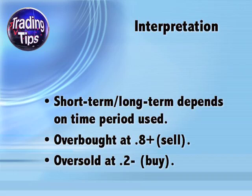The first thing to consider when interpreting Stochastic RSI is the duration of the time period under consideration, as this correlates to whether it can be considered a long-term or short-term indicator. Using a 14-day time period, for example, would make it a short-term indicator; using a 200-day time period would make it a long-term one. Stocks with Stochastic RSI values of 0.8 or higher are considered overbought and due for a correction — a sell signal. Conversely, stocks with values of 0.2 or less are considered oversold and due for a rebound — a buy signal. After all the calculations, Stochastic RSI is pretty easy to interpret.